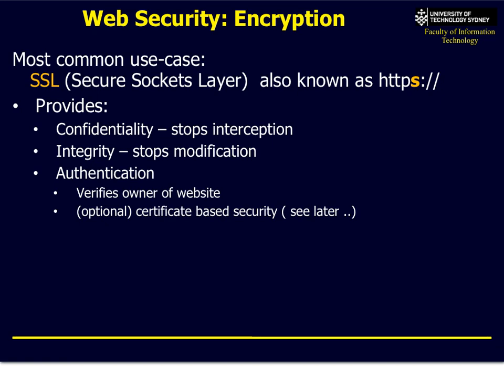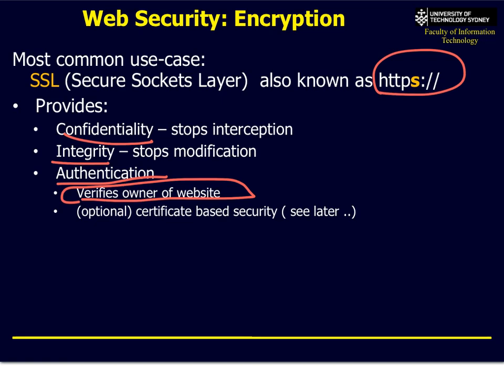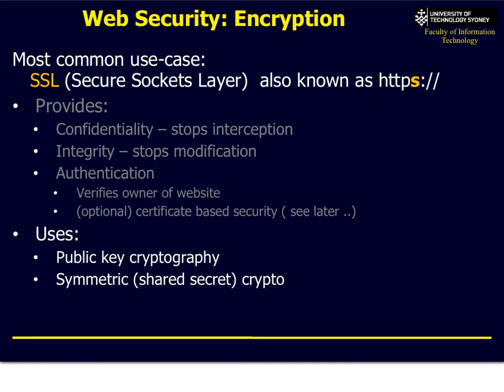This is the essence of web security. Most of you have probably seen SSL — you know it as HTTPS. Your browser pops up with an indication that it's encrypted, usually a little lock in the top left corner or a green address bar. It provides the whole CIA stack: confidentiality (prevents interception), integrity (stops modification), and authentication — it verifies the owner of a website.